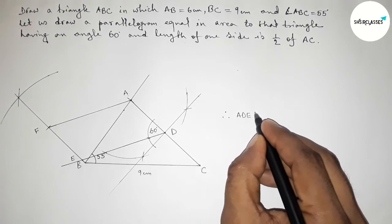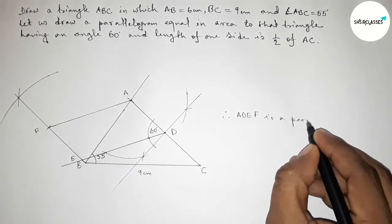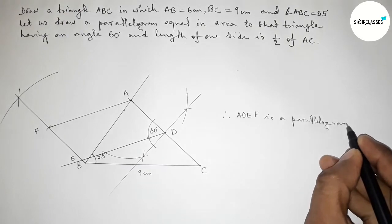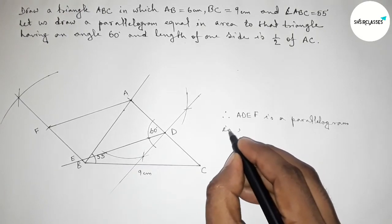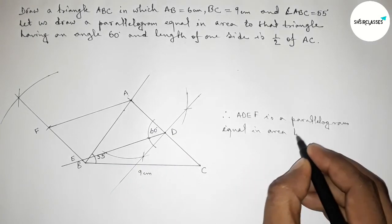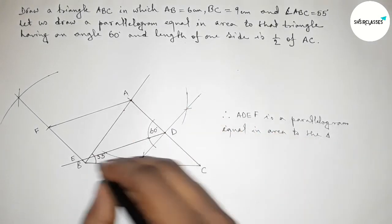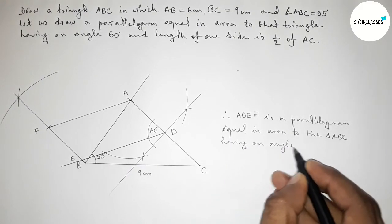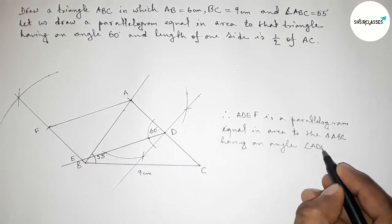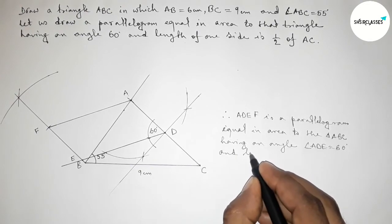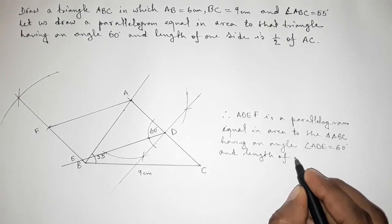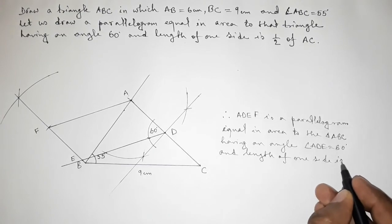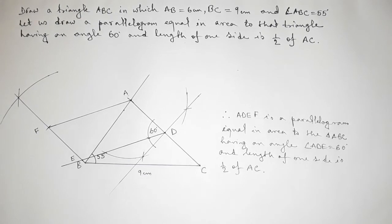Therefore, ADEF is a parallelogram equal in area to triangle ABC, having an angle of 60 degrees, and with the side length half of AC of triangle ABC. That's all — thanks for watching! If this video was helpful, please share it with your friends.